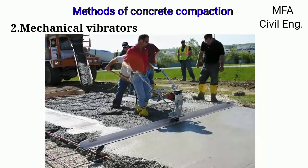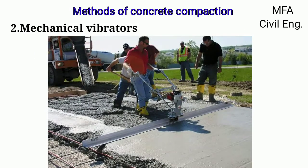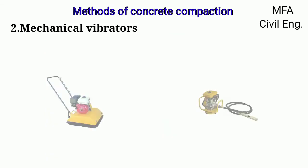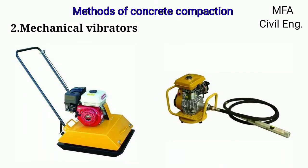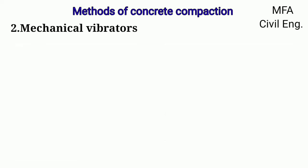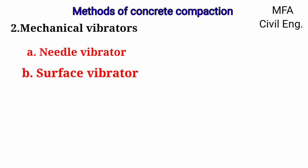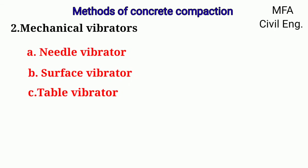Vibrators are used for the compaction of concrete. Note that different vibrators are suitable for different situations and different structural members. The different types of vibrators commonly used for the compaction of concrete are needle vibrators, surface vibrators, and table vibrators.